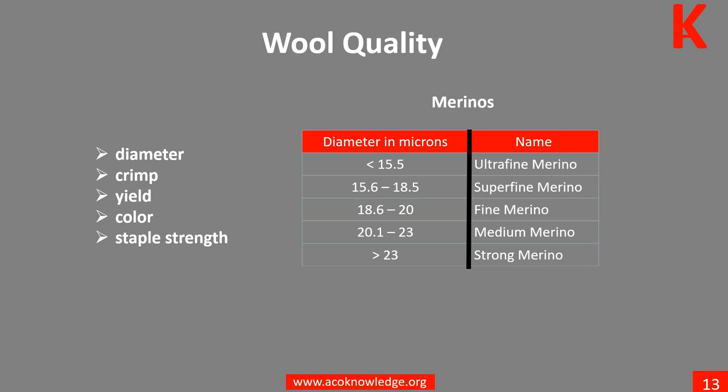Merino wool is typically 3 to 5 inches (76 to 127 millimeters) in length and is very fine — between 12 and 24 microns. The finest and most valuable wool comes from merino hoggets. Wool taken from sheep raised for meat is typically coarser, with fibers 1.5 to 6 inches (38 to 152 millimeters) in length. Damage or breaks in the wool can occur if the sheep is stressed while growing its fleece, resulting in a thin spot where the fleece is likely to break.